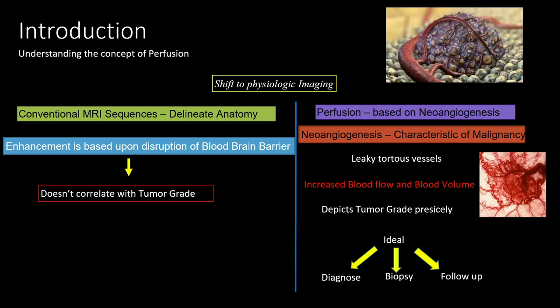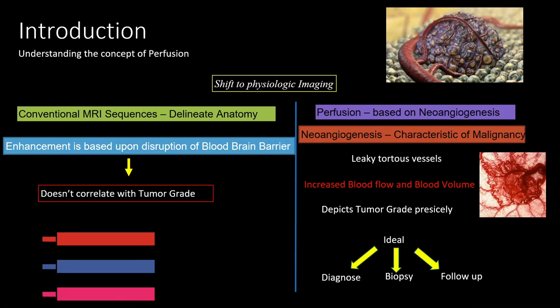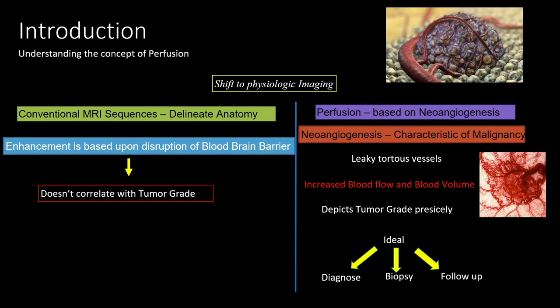Coming to the role of ASL in brain tumor imaging. The concept of perfusion itself came from tumor imaging. Conventional MR sequences based on contrast enhancement reflect only disruption of the blood-brain barrier and do not correlate with tumor grade. All these tumors exhibit neoangiogenesis based upon their grade, and perfusion can determine the degree of neoangiogenesis. Therefore, perfusion techniques are ideal to diagnose and grade tumors, guide biopsy to avoid sampling bias, and follow patients after treatment to diagnose pseudoprogression and pseudoresponse.